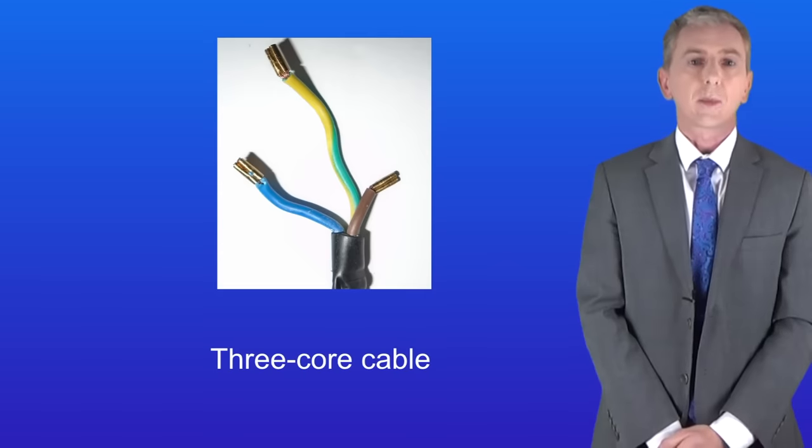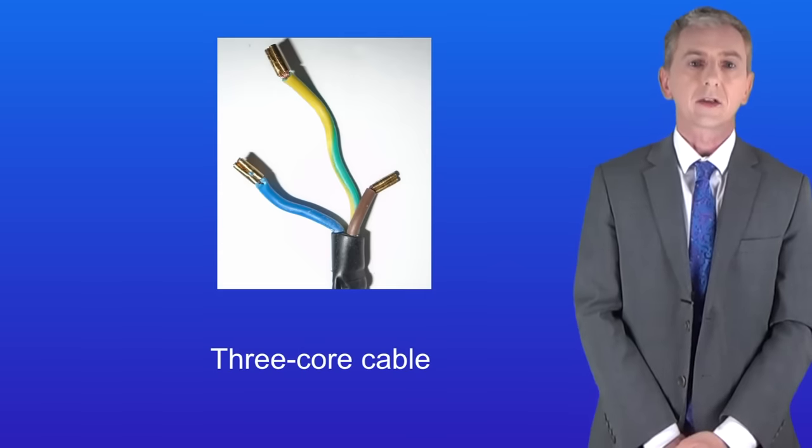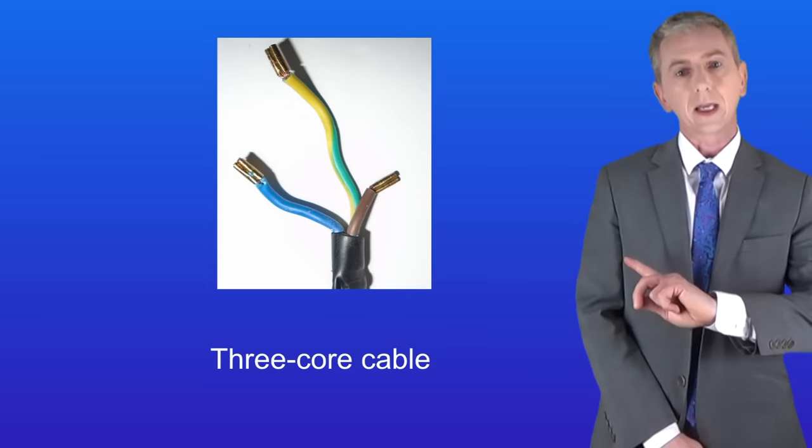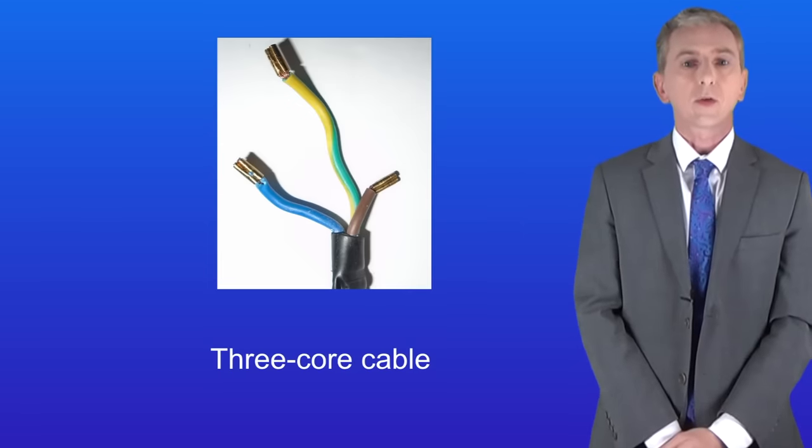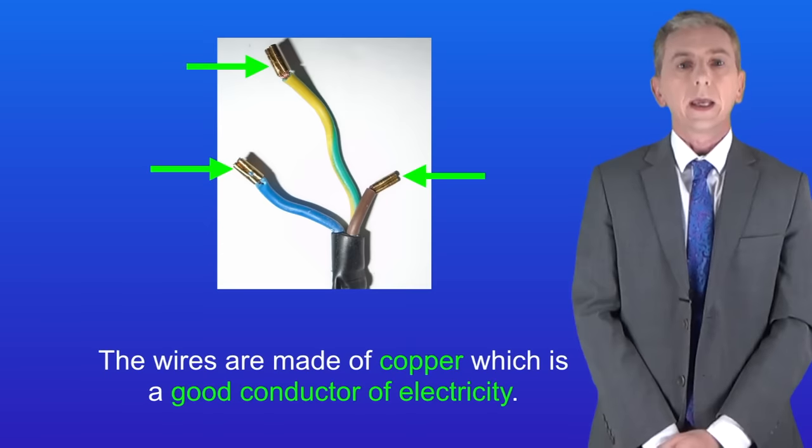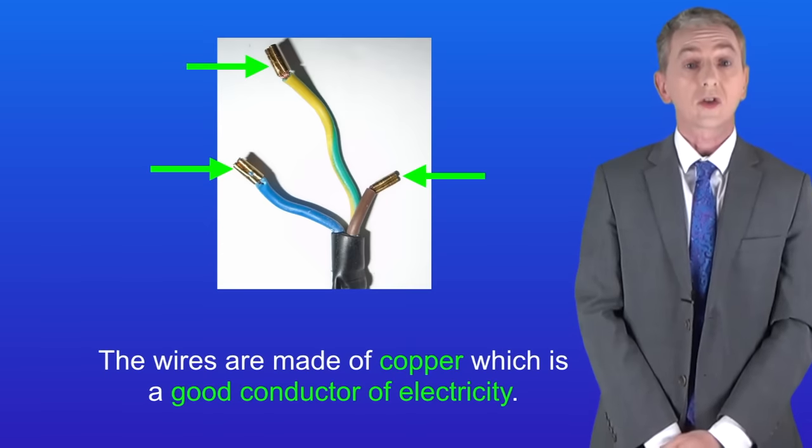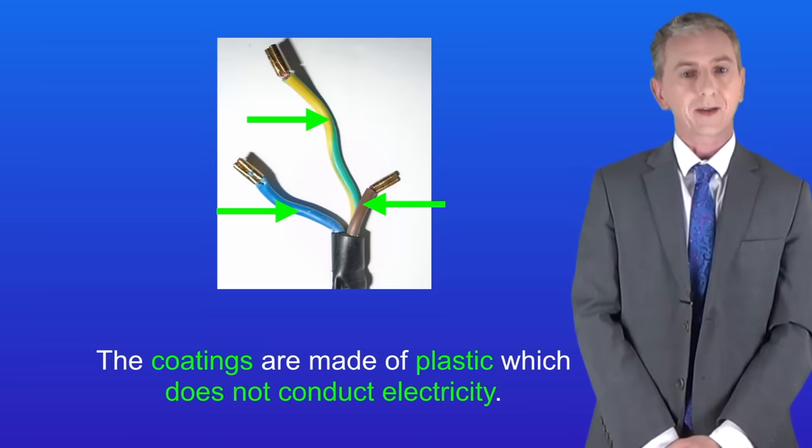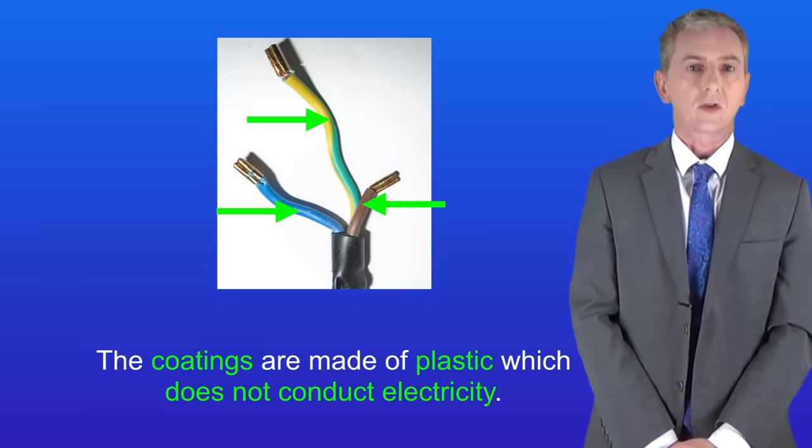Now electrical appliances in the UK are normally connected to the main supply using three core cable and I'm showing you that here. As you can see there are three wires. Each wire is made of copper which is a good conductor of electricity however the coatings are made of plastic which does not conduct electricity.